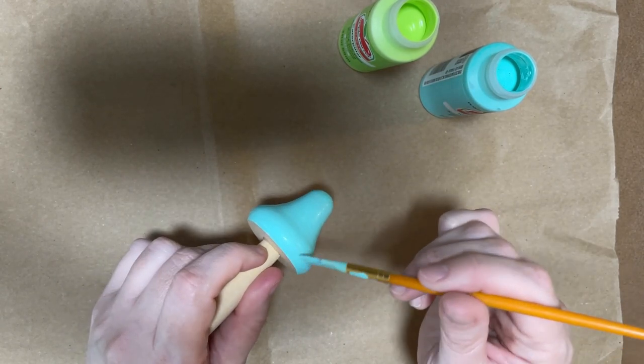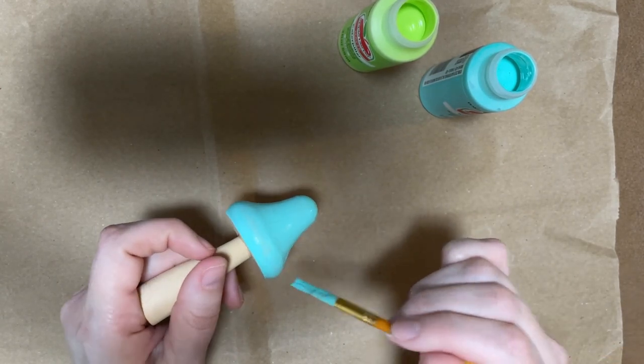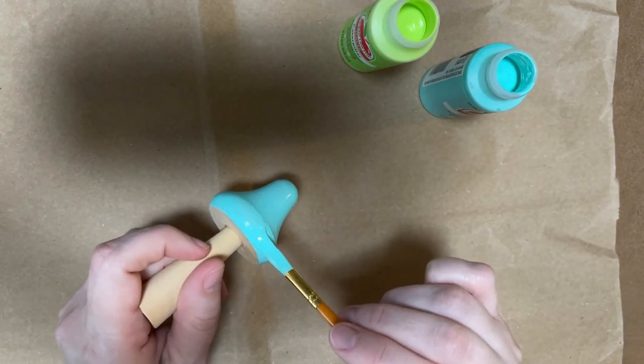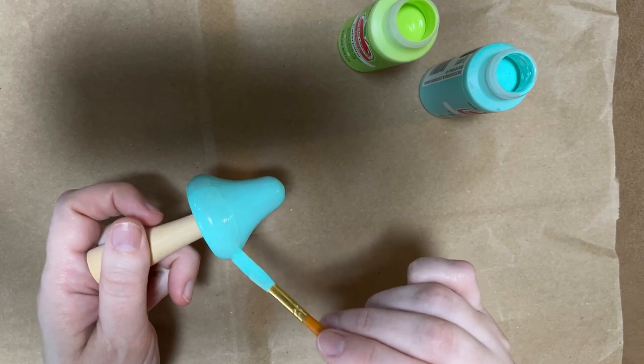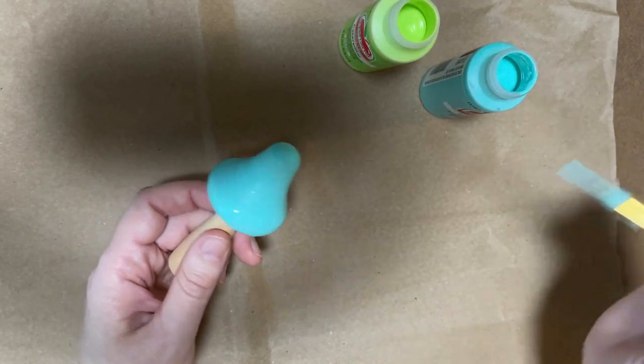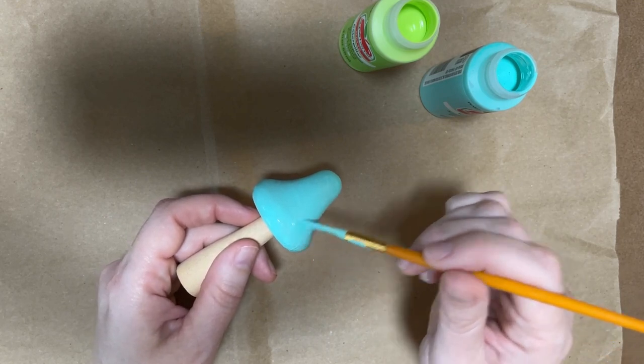I used too much paint on my paintbrush as you can see, and so I'm trying to smooth it out so that it doesn't look gloppy. If you have the same problem, you can use your brush to lift some of that paint off and wipe it on the edge of your plate, whatever you're using as a palette, or bottle.